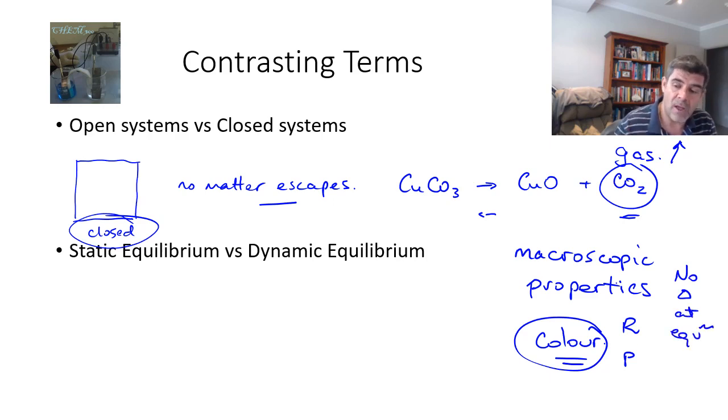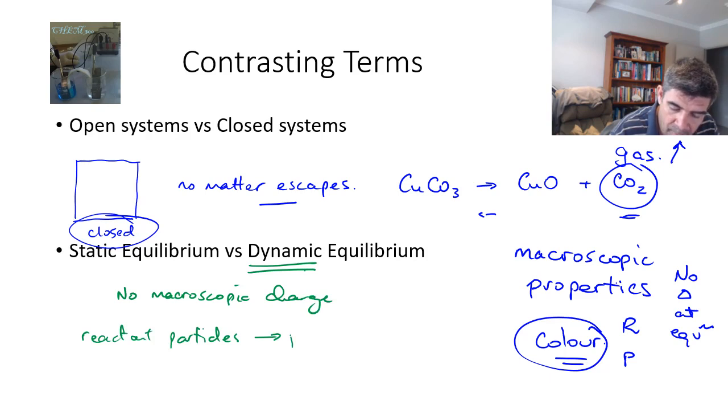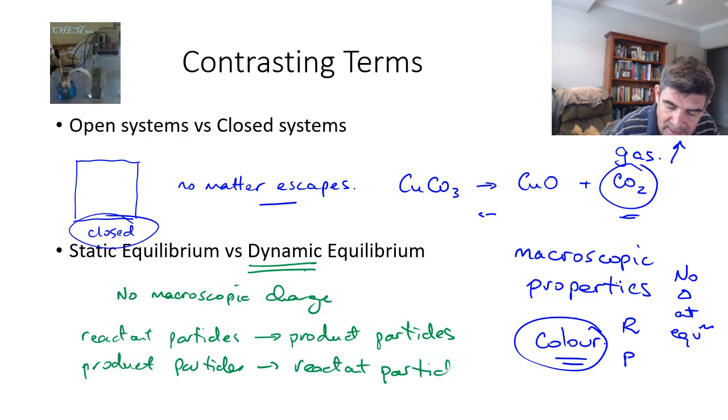But we do know that the system itself must be dynamic. That is, despite the fact that there is no macroscopic change, we do have reactant particles becoming product particles, and we have product particles becoming reactant particles. But they're both happening at exactly the same rate, and therefore, that's why we don't see a change in the system. This is the difference between static equilibrium and dynamic equilibrium.